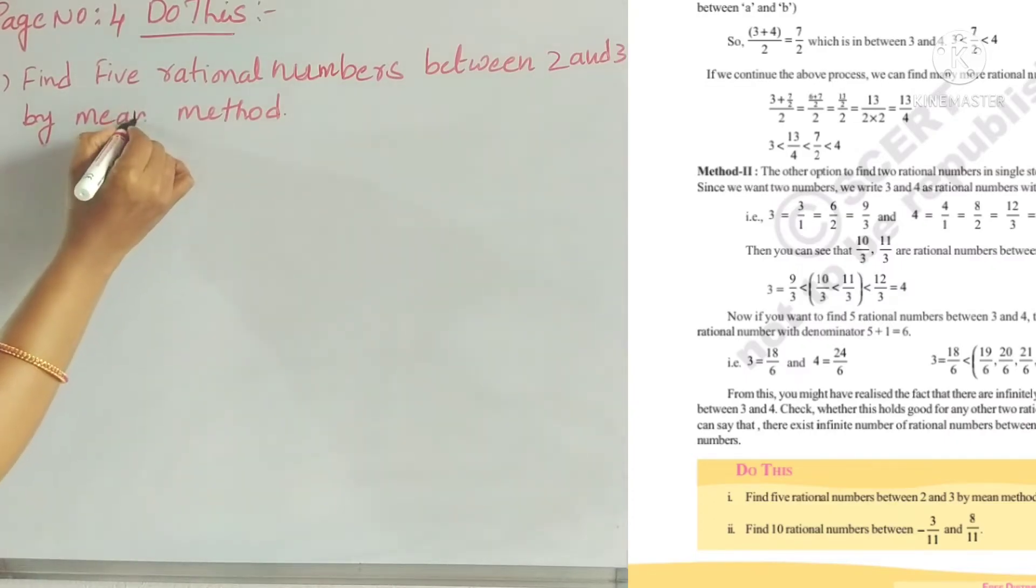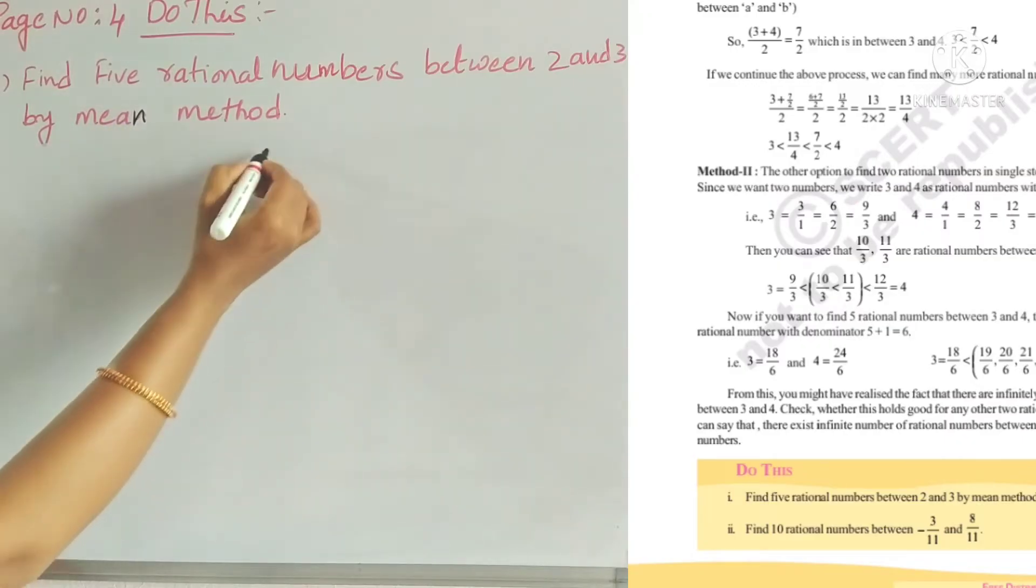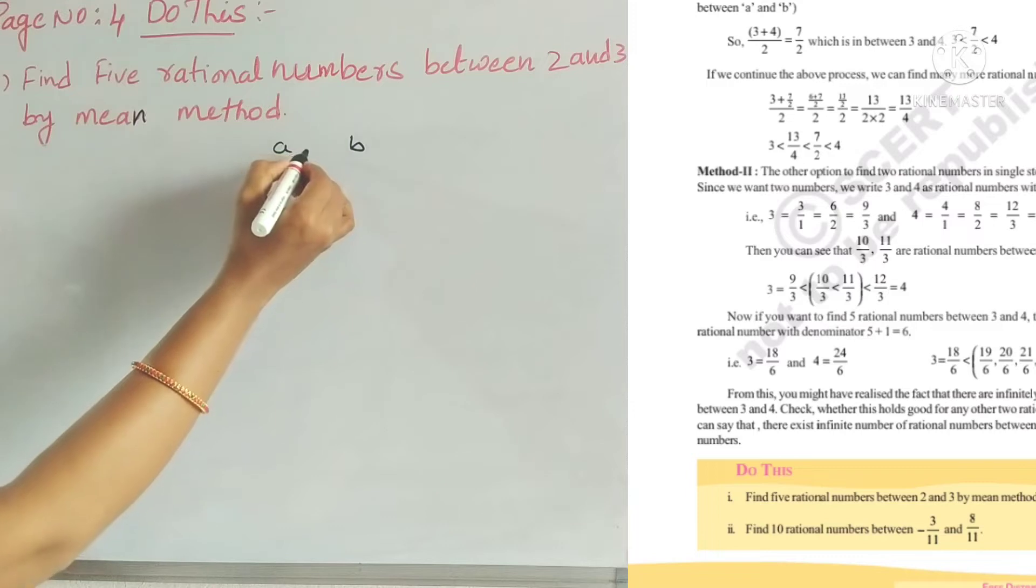You already know how many rational numbers lie between any two rational numbers. There are infinite rational numbers between any two rational numbers.